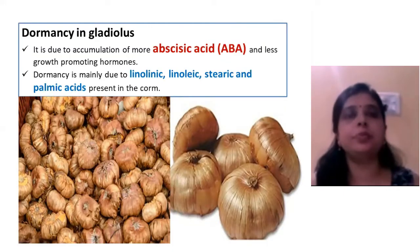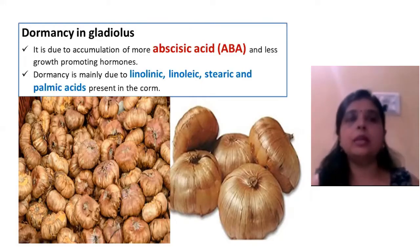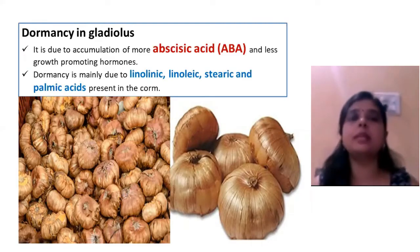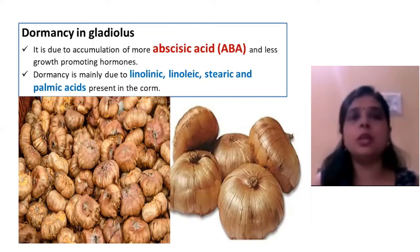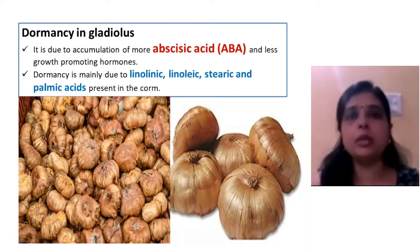Gladiolus exhibits a period of dormancy. The dormancy is due to the accumulation of abscisic acid, linolenic acid, linoleic acid, stearic acid, and palmitic acids present inside the gladiolus corm, which hinders sprouting. If such a bulb is planted in the field, it will not sprout because these growth inhibitors prevent sprouting.